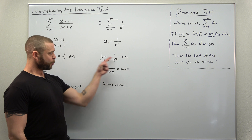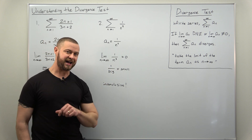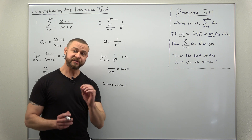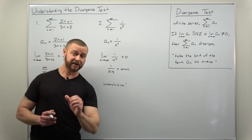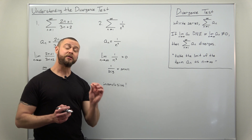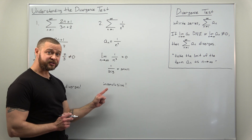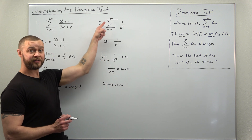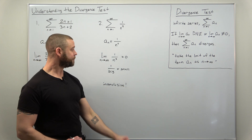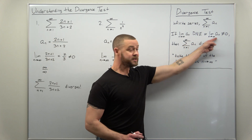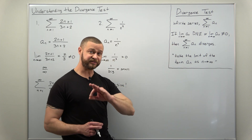There's a common misconception here: that the limit of the term equaling zero implies the infinite series converges — that is not true in general. As it turns out, this particular infinite series does converge, which you can see by recognizing it as a p-series, but make sure you realize the divergence test tells you nothing about whether this series converges or diverges. The divergence test is inconclusive because neither of its conditions are met.